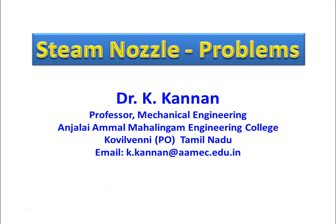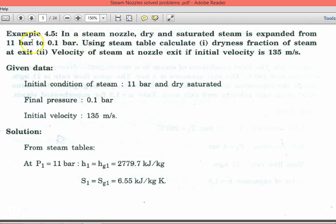Dear students, this is again a steam nozzle problem, Part 2. We will see another four to five problems on steam nozzles. Example 4.5: In a steam nozzle, dry and saturated steam is expanded from 11 bar to 0.1 bar using steam tables. Calculate the dryness fraction of the steam at exit and the velocity of the steam at the nozzle exit if the initial velocity is 135 meters per second. The given data: initial condition is 11 bar and dry saturated.